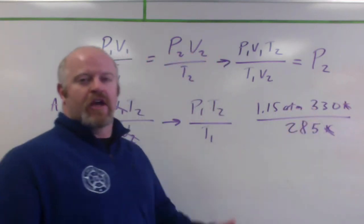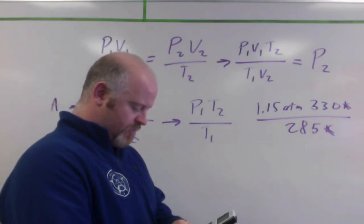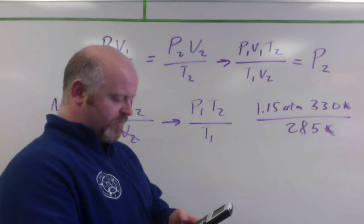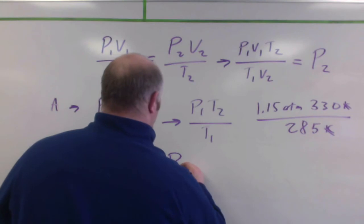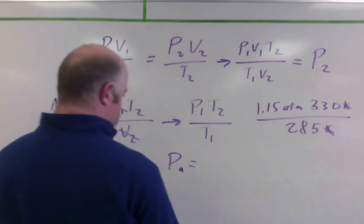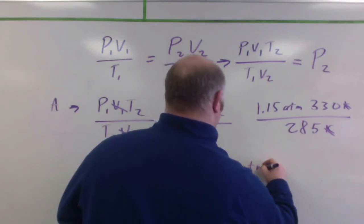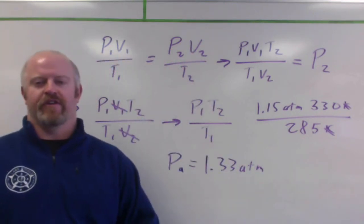So we take the 1.15 times 330 divided by 285, and we get for can A a pressure, for can A, 1.33 atmospheres to three significant figures.